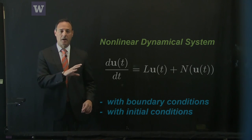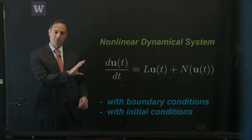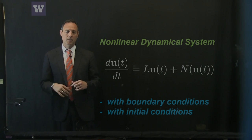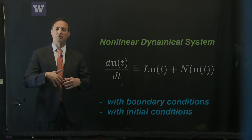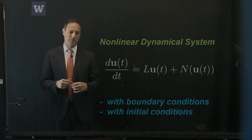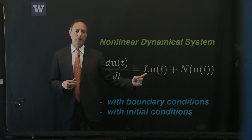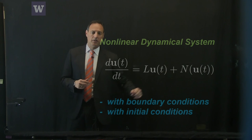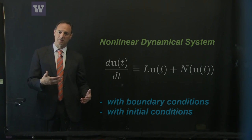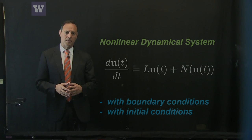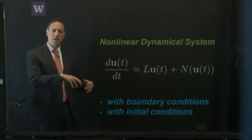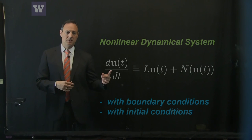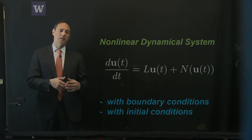We typically think about a nonlinear dynamical system of this form for reduced order modeling, where you have some time dynamics of some vector u. This may be a discretization of some large PDE or a large network dynamical system. You have some nonlinear evolution dynamics, a nonlinearity, boundary conditions, and initial conditions. Part of our objective is to figure out how to solve this more efficiently, especially if the state space u is extremely large.